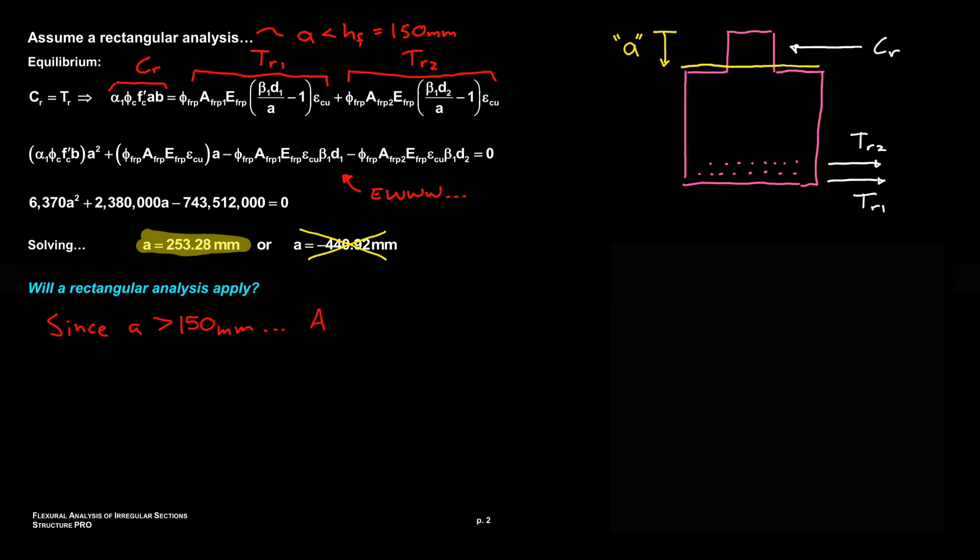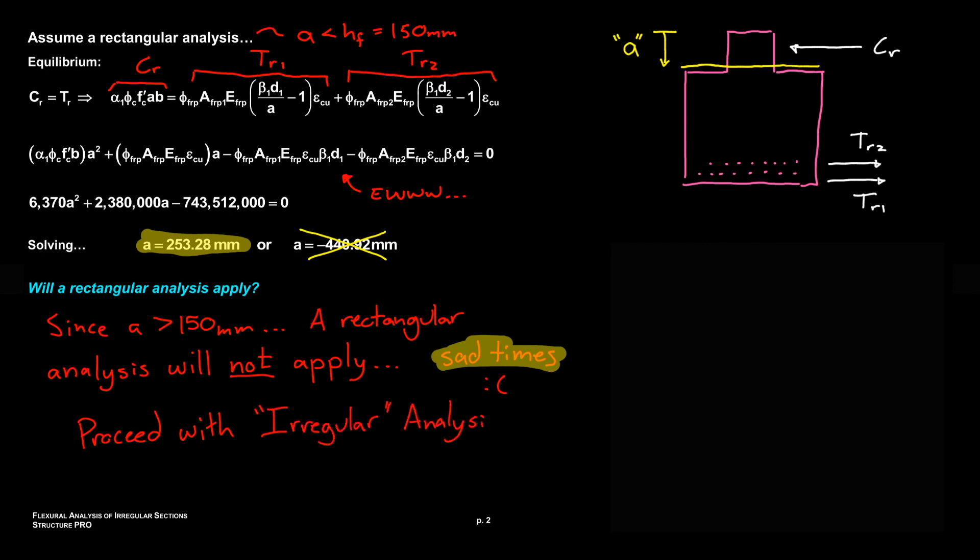So let's answer our question. Will a rectangular analysis apply? Well we assumed it did and it said that A was greater than 150 moving us into the web. So no, a rectangular analysis will not apply and this is extremely sad for us because it means we're going to be sitting here for another four minutes instead of another 30 seconds. Alas, we must proceed with an irregular analysis but that was the whole point of this example so you know it's not half bad.